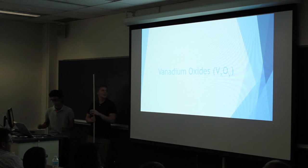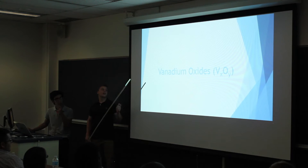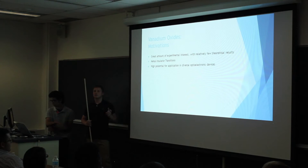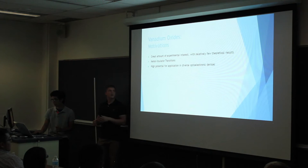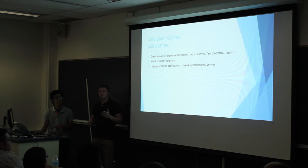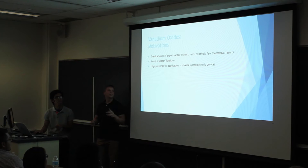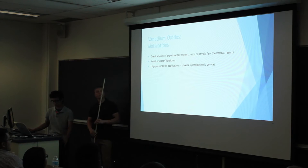Now that we have the background, Nate's going to talk about his material, the vanadium oxide. So, on to the actual projects. The materials that I'll be focusing on are the different allotropes of vanadium oxide. There are a number of reasons I chose these materials specifically. One being that there is a great amount of experimental interest in them, while still being relatively few theoretical results. I was finding many different experimental studies, which shows there is interest and some use for them, but when I came to the theory, it was lacking. I actually hope to fill in that gap.